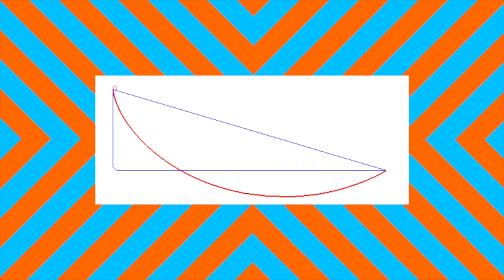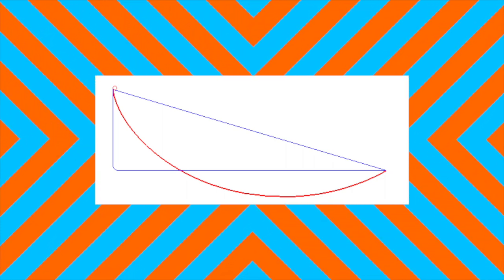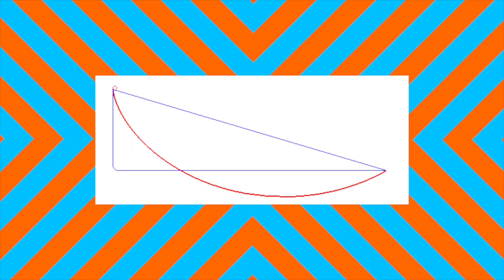Imagine we want to roll a ball down a hill, but we get to design the hill in order to make the ball reach its destination as fast as possible. This is the brachistochrome problem, and I'll leave links to other videos about it, but the result is this curve called a cycloid.